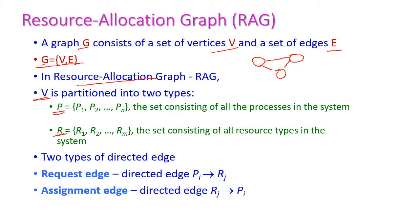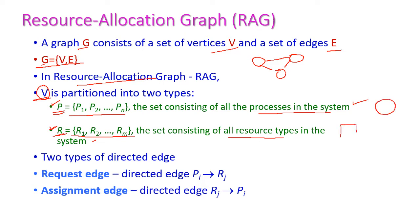Process vertices are represented by the word P and resource vertices are represented by the word R. P equals P1, P2, etc., up to Pn — that means a set consisting of all processes in the system. In resource allocation graph, type P represents the symbol circle and type R is represented by the square.